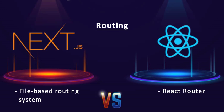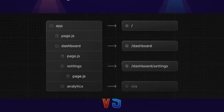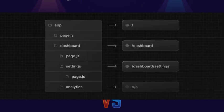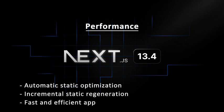In terms of routing, React.js routing is managed by libraries like React Router, where you define your routes manually. With Next.js, it uses a file-based routing system, meaning the structure of your pages directory automatically maps your routing, making it super intuitive and easy to manage. In terms of performance, Next.js has the upper hand with features like automatic site optimization and incremental static regeneration, ensuring your app is fast and efficient even as it grows.